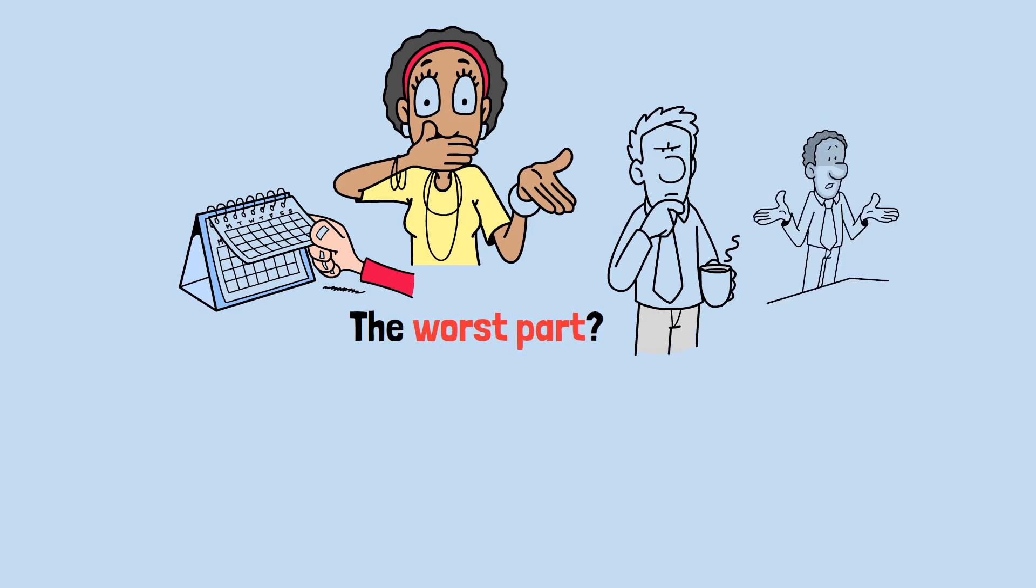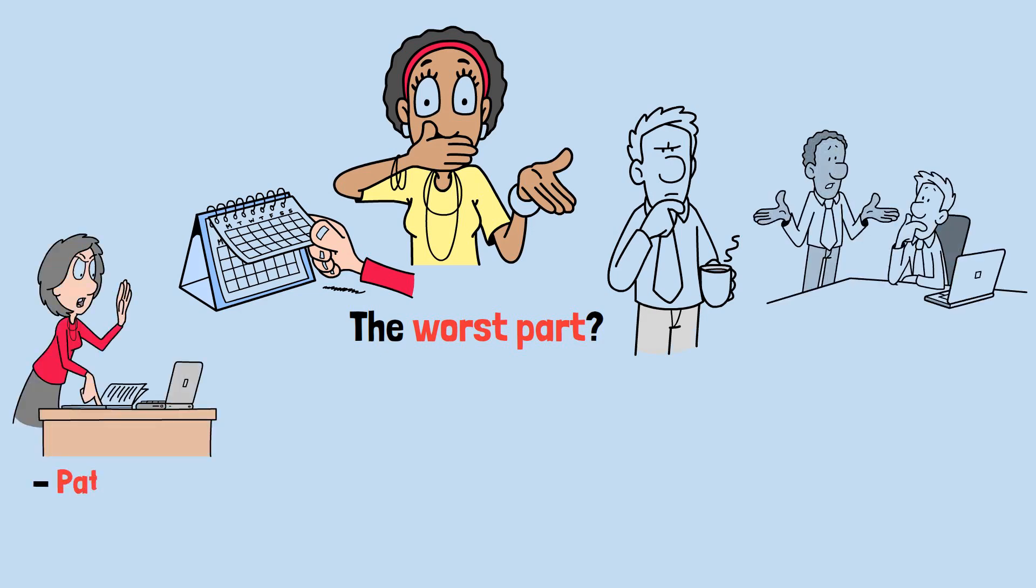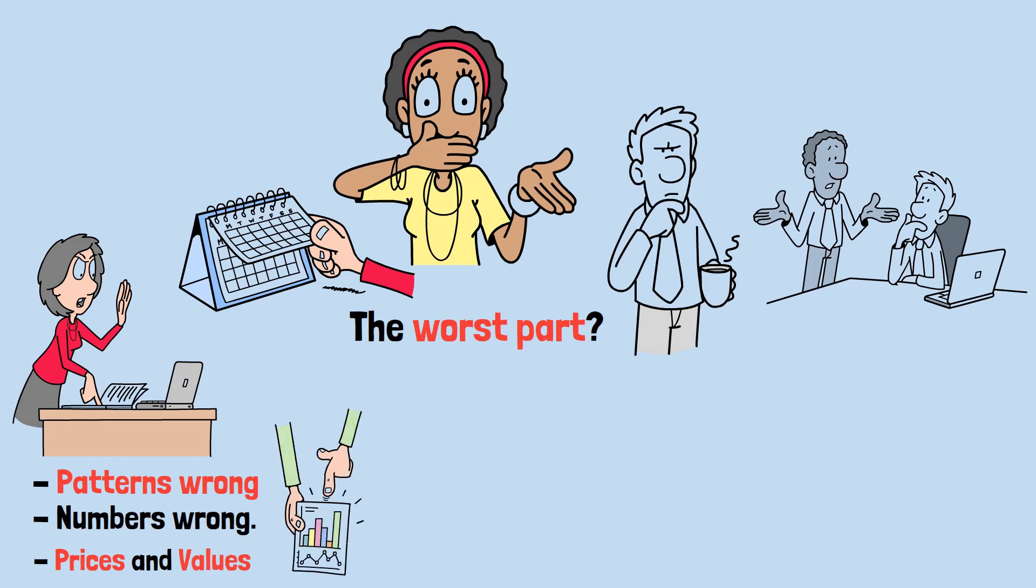You don't even realize it's happening. Sometimes other people are actively steering your mind exactly where they want it to go. You get patterns wrong. You get numbers wrong. You get prices and values completely backwards. And here's the thing. It's not actually your fault, right? Wrong.